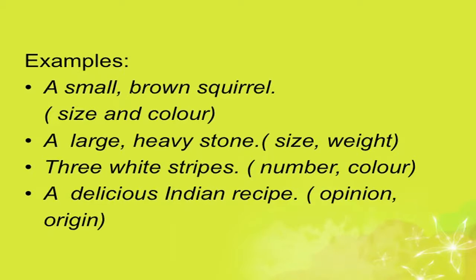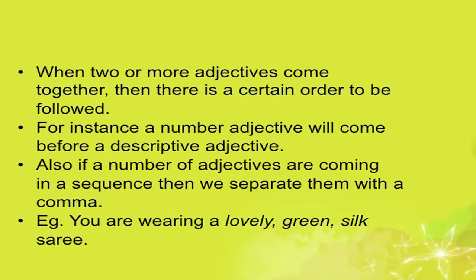'A delicious Indian recipe' — delicious is opinion, Indian is origin. When two or more adjectives come together, there is a certain order to be followed: a number adjective comes before a descriptive adjective. Also, if a number of adjectives come in sequence, we separate them with a comma. For example: 'You are wearing a lovely green silk sari.' Now learners, do the exercises given in your book under section 2.1.